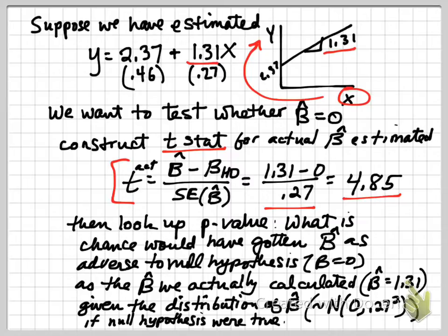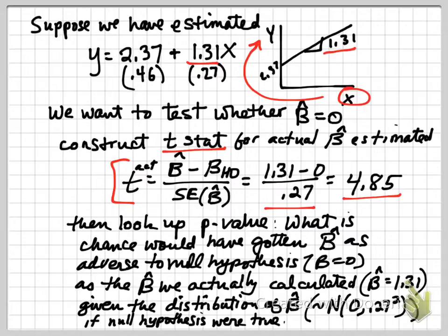If the null hypothesis were true, what is the chance we would have gotten a β̂ as adverse to that null hypothesis as the β̂ we actually calculated — 1.31? In other words, if the null is true and β equals 0, and we calculated a β̂ pretty far from 0, what's the chance we would have calculated something that far away or even further? If that chance is high, we say it could be 0, since the chance of calculating something far from 0 is actually pretty high — so we shouldn't reject that it equals 0.